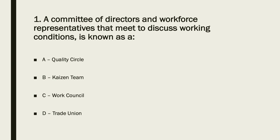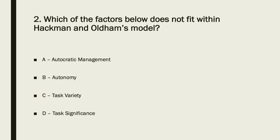Unit 6, A-level business: the answer to question one is C — works council. For question two, in the Hackman and Oldham model, autonomy, task variety, and task significance are all part of it, so the answer is A. Autocratic management does not fit in with that model.